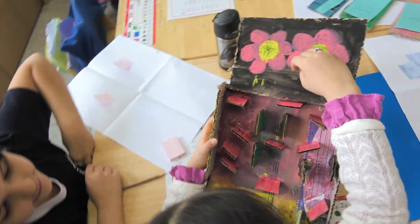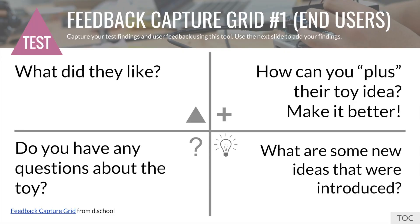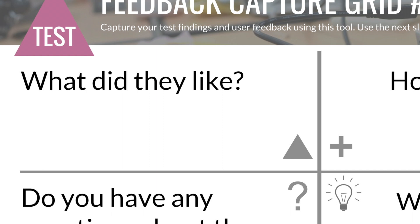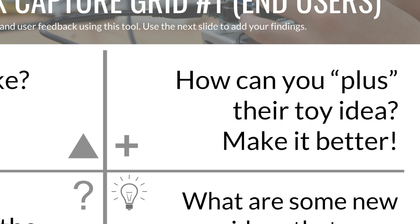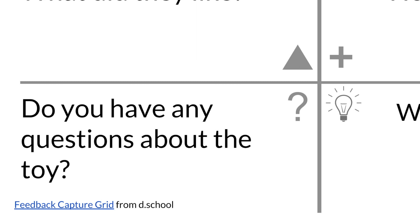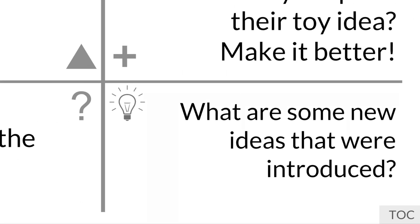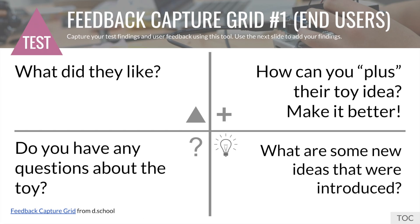The second graders used their feedback capture grid to document their new learnings and feedback during the testing session. The feedback capture grid contains four quadrants. In the first quadrant, the second graders wrote down their users' feedback on what they liked about their toy prototype. The second quadrant contained the users' constructive feedback, while the third quadrant contained the questions that arose during the testing. The fourth quadrant contained new ideas or improvements that emerged from the tests and the information they were looking to record.